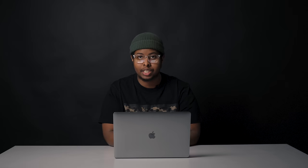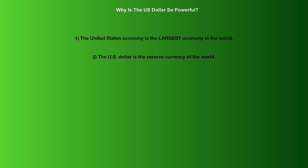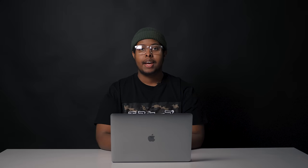As you can see, the dollar is king in the Forex market. It is the most traded currency, taking up about 84.9% of all transactions. Why is the dollar so powerful? Number one, the United States economy is the largest economy in the world. Number two, the US dollar is the reserve currency of the world. Number three, the United States has the largest and most liquid financial markets. Number four, the United States has a stable political system.